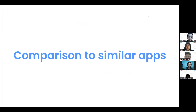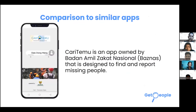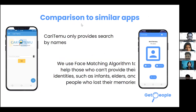Our application, Get People, serves a similar purpose to Charitomo, an application by Busnax designed to find and report missing people. The difference is that Charitomo only provides search by name, limiting it to people who can provide their identities. Get People has a wider range because we use a face matching algorithm to help those who cannot provide identities, such as elderly people and those who have lost their memories.